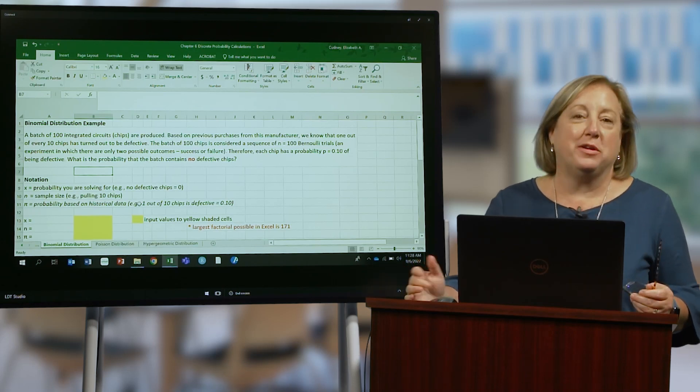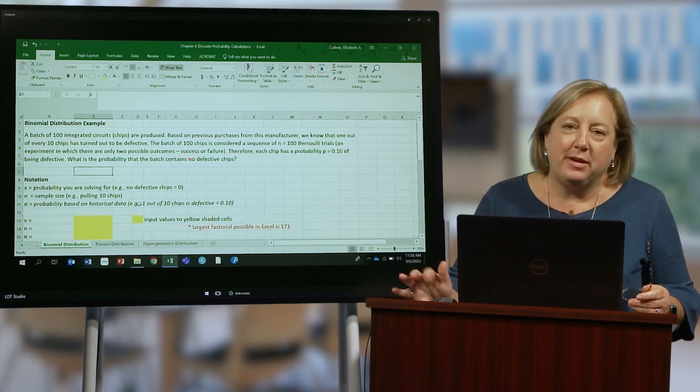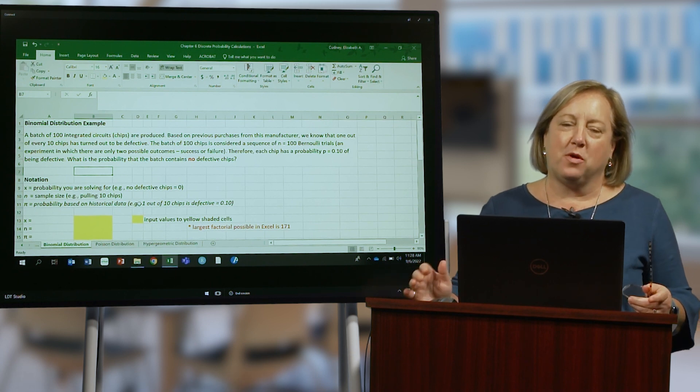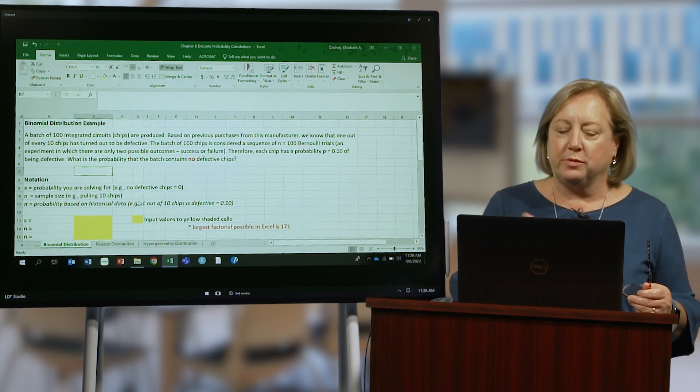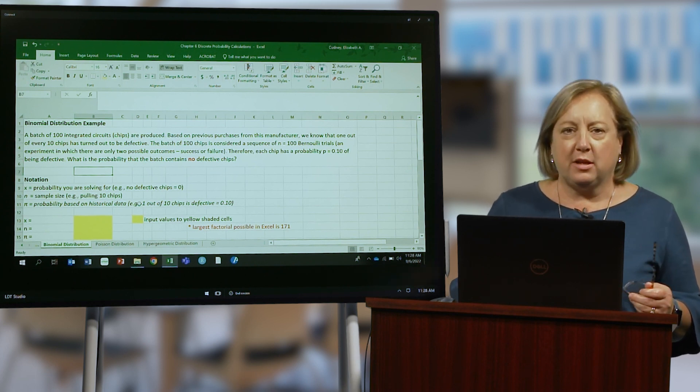In this video we're going to talk about the binomial distribution. The binomial distribution is a special form of discrete distribution that takes on values of 0 or 1, yes, no, true, false. So let's take a look at a calculation.